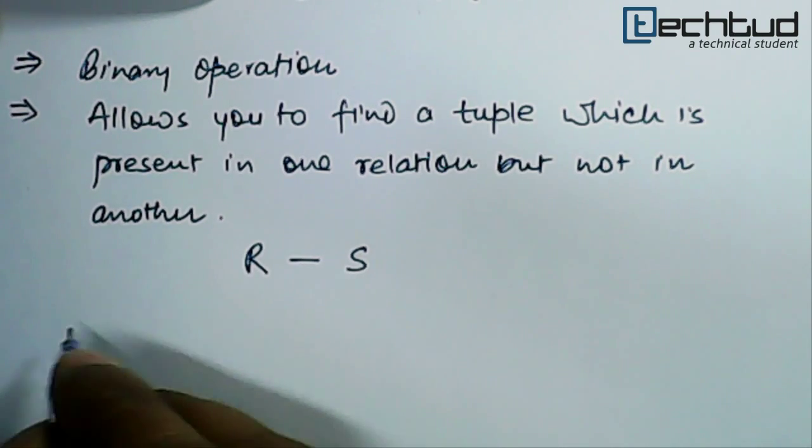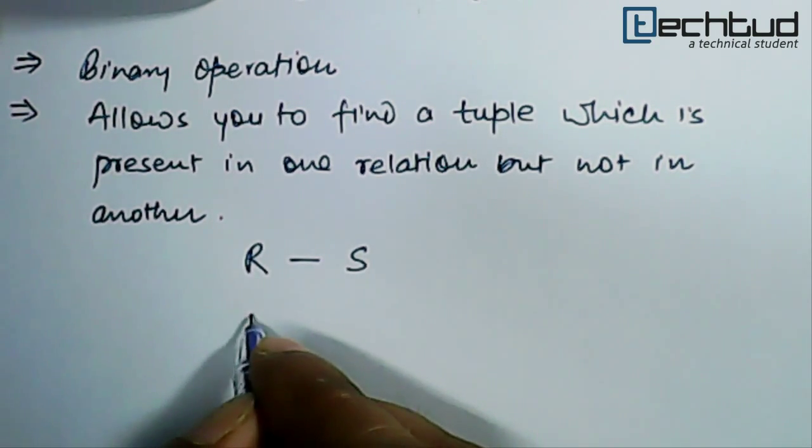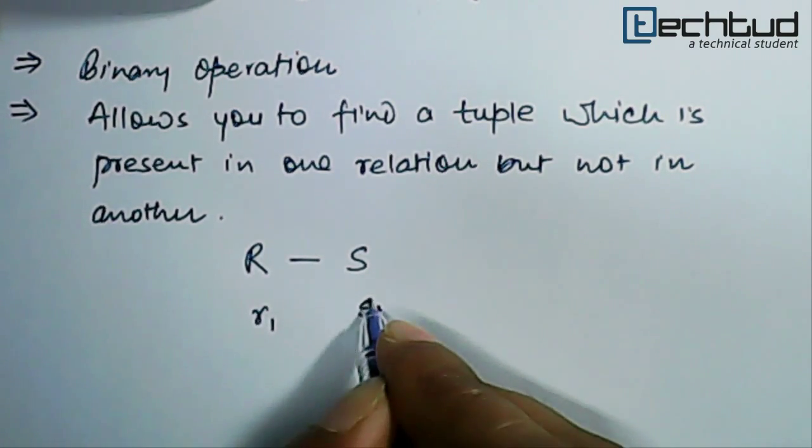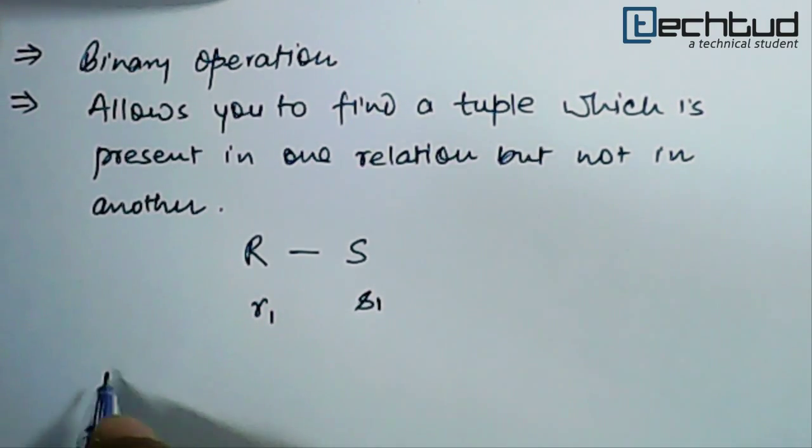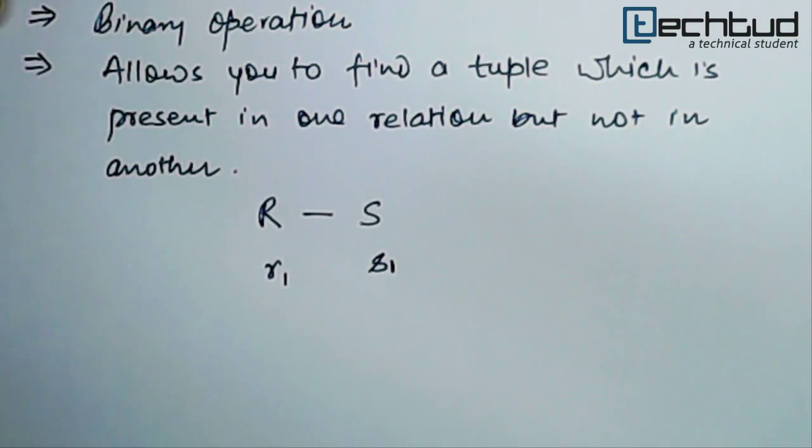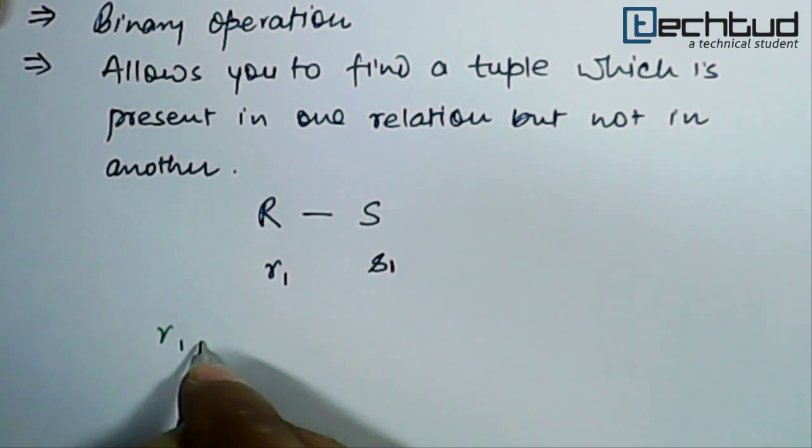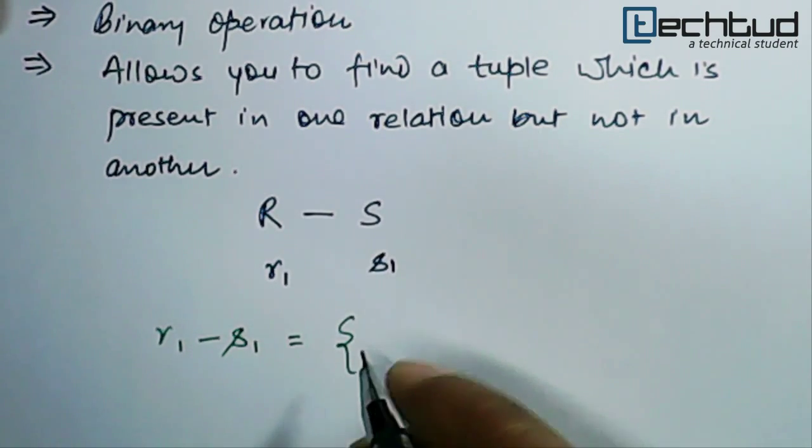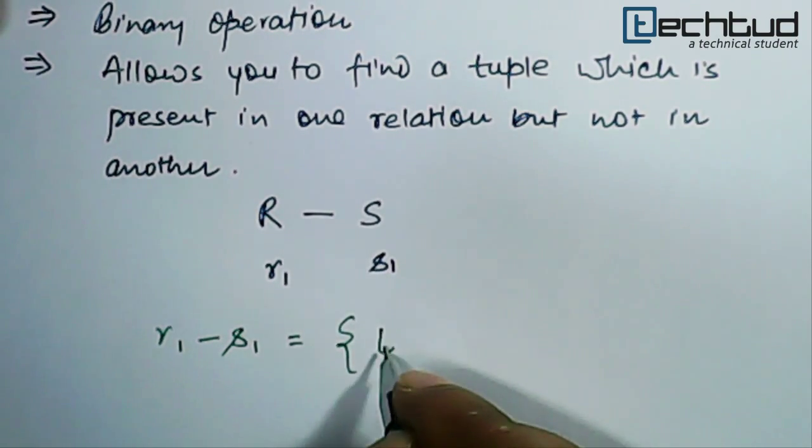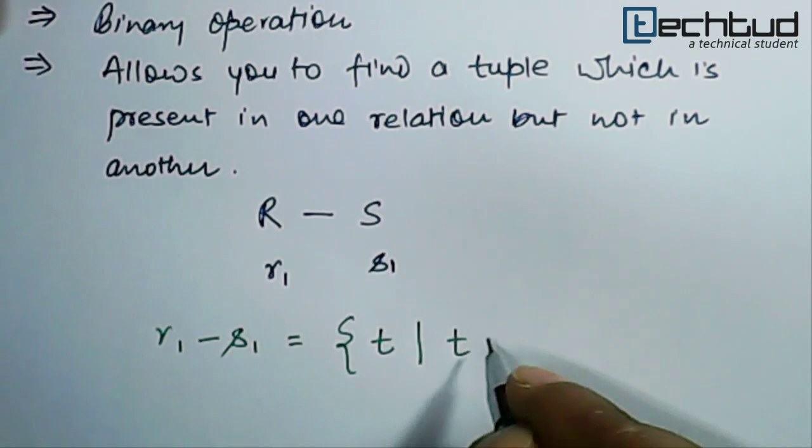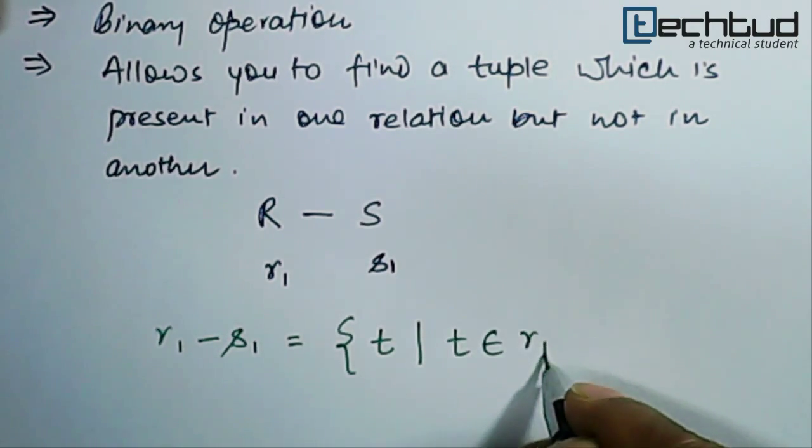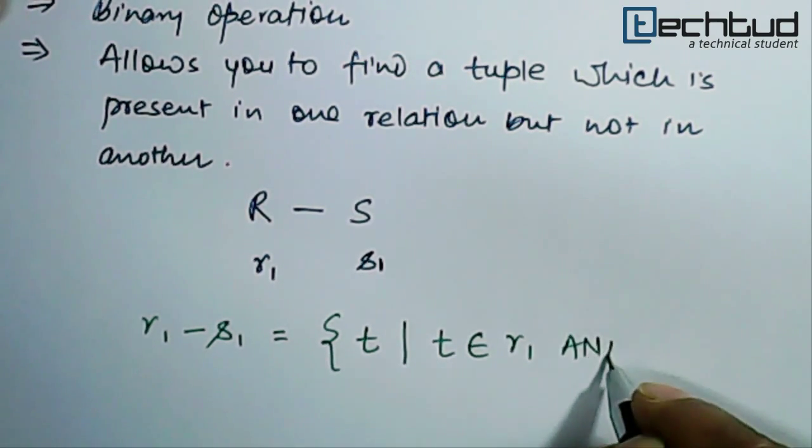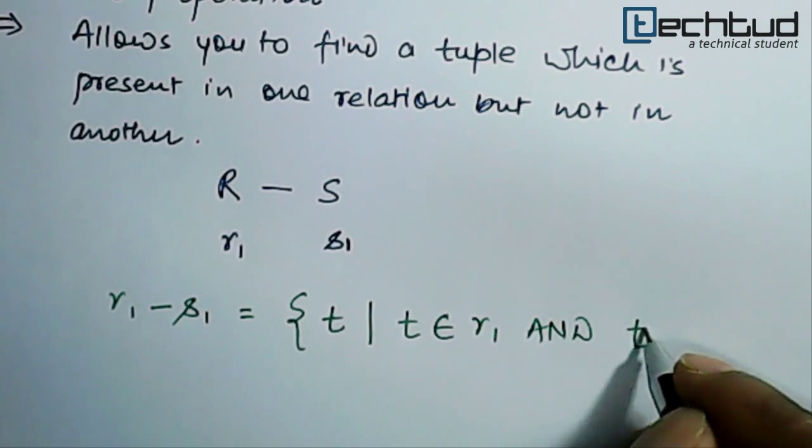How do we write it? If we write let us say R1 is instance of R and S1 is instance of S, then if we write R1 minus S1 it means that of course it returns a tuple. And it means that a tuple which belongs to R1 but not belongs to this tuple T does not belongs to R2.